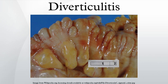Less commonly, an individual with diverticulitis may have right-sided abdominal pain. This may be due to the less common right-sided diverticula or a highly redundant sigmoid colon. Some patients report bleeding from the rectum.